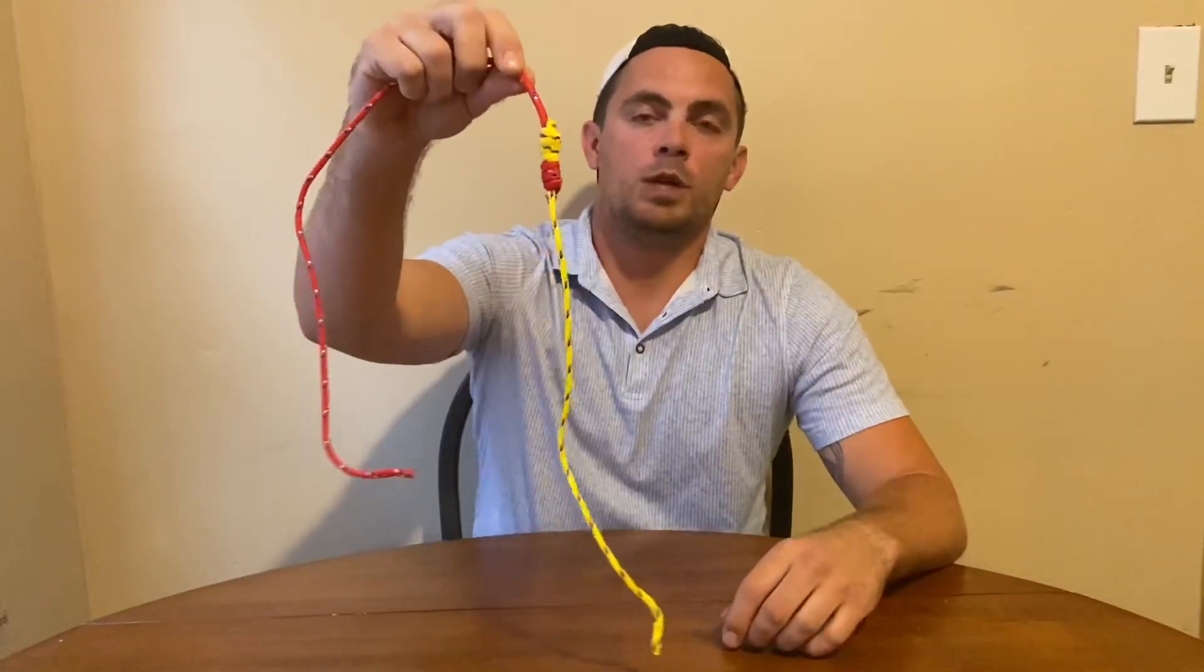What's up everybody? Welcome back to Hooked on Bassin. Today we're going to be tying a double uni knot. It's a very easy to tie, very good knot to tie your fluorocarbon leader onto your braided line.